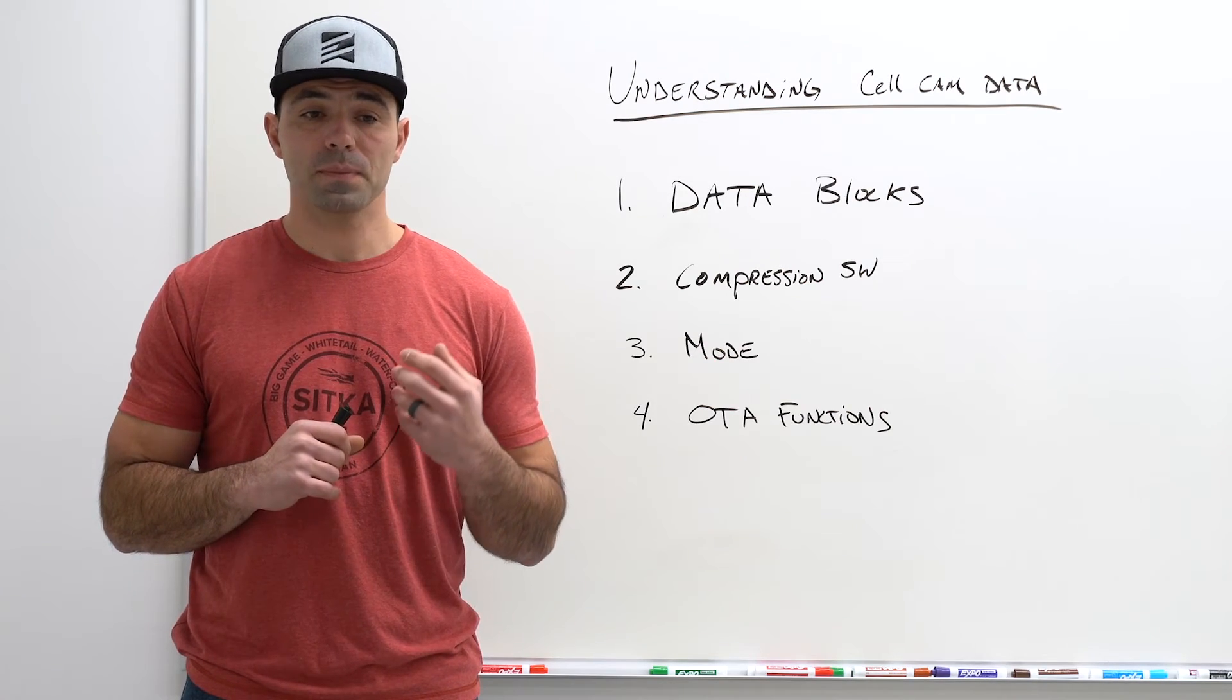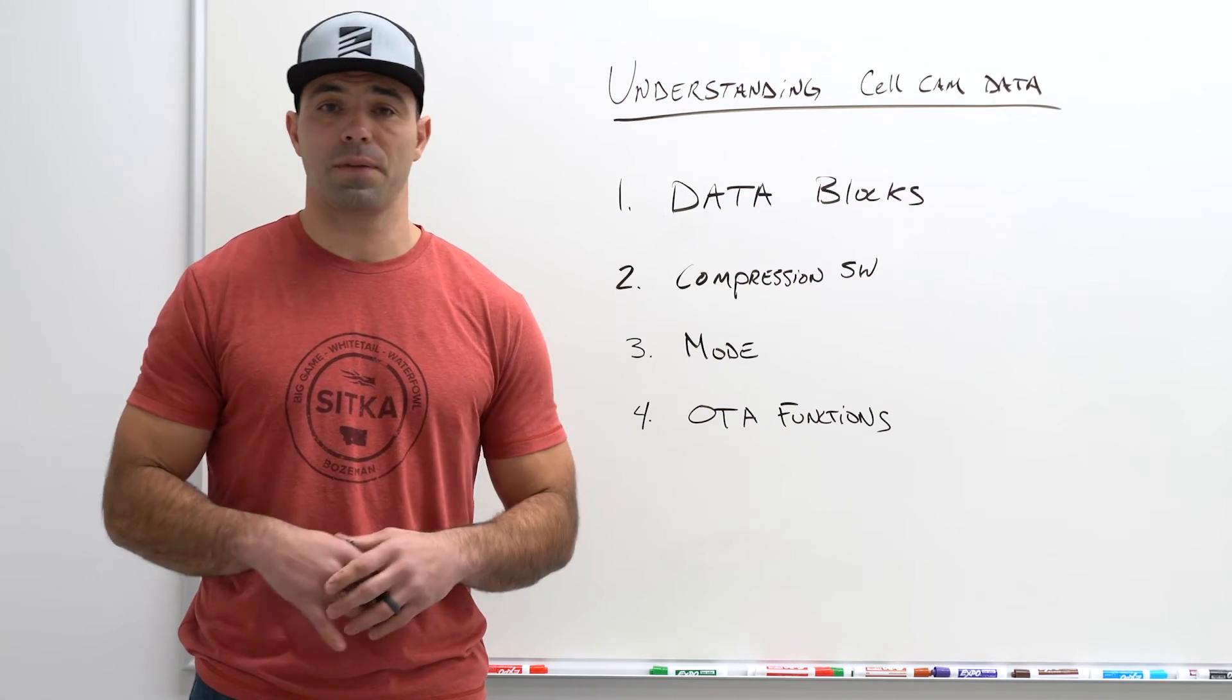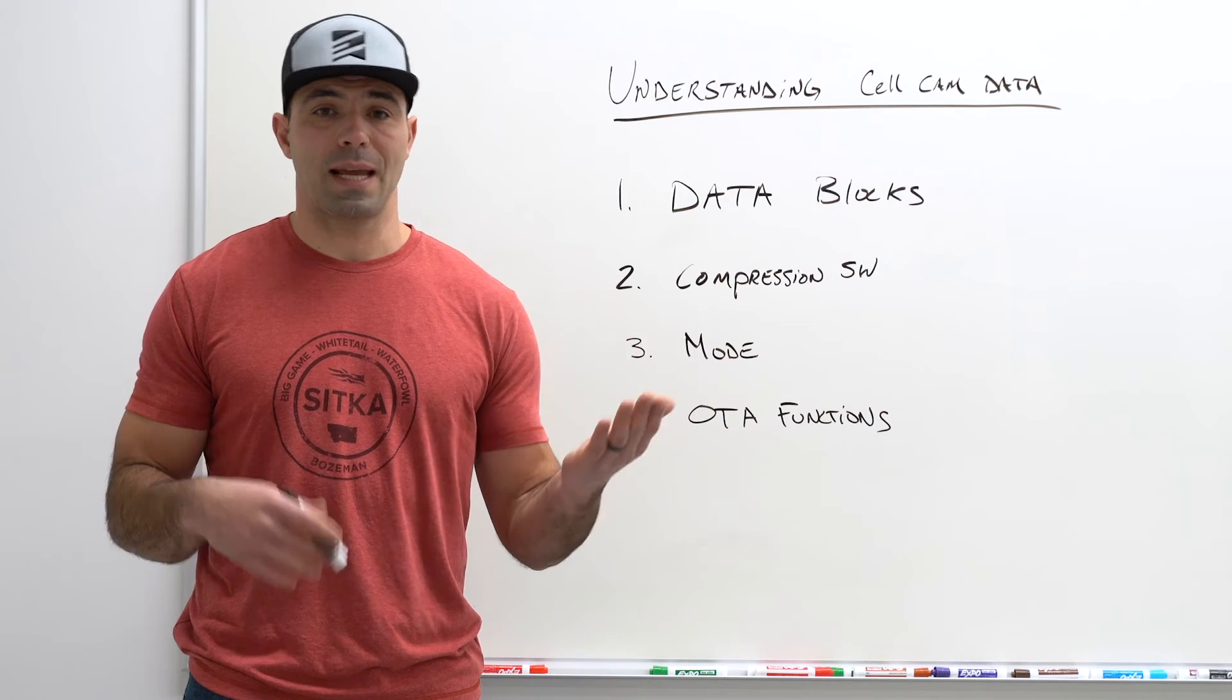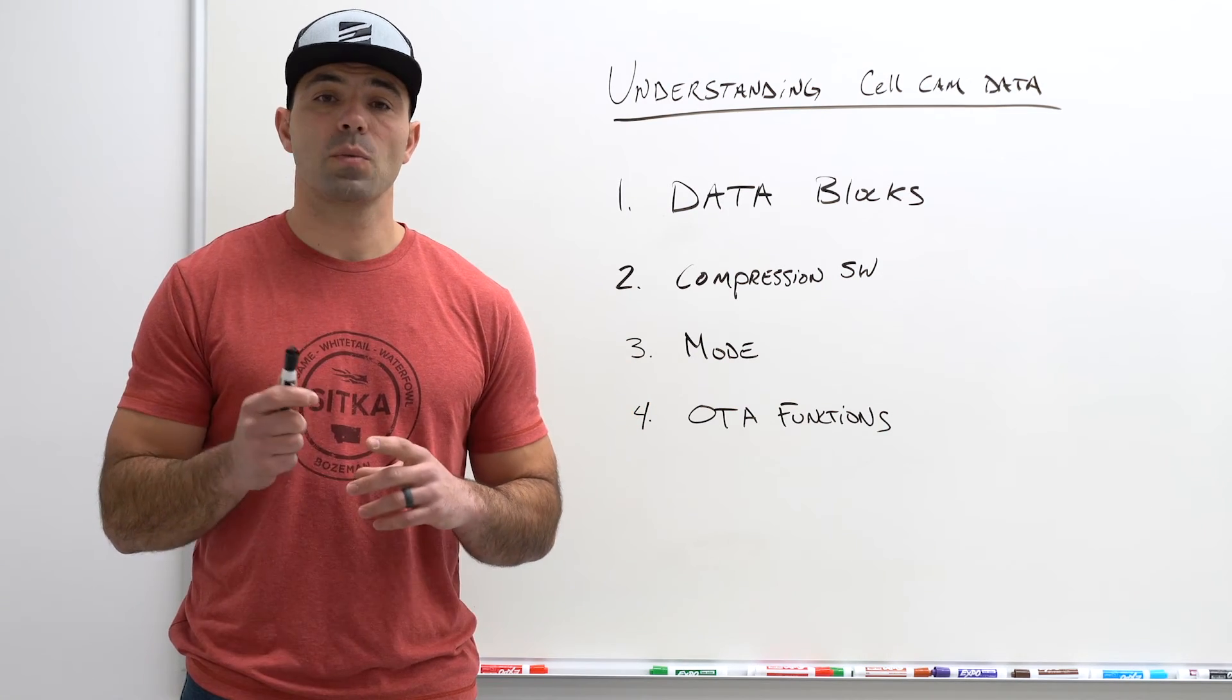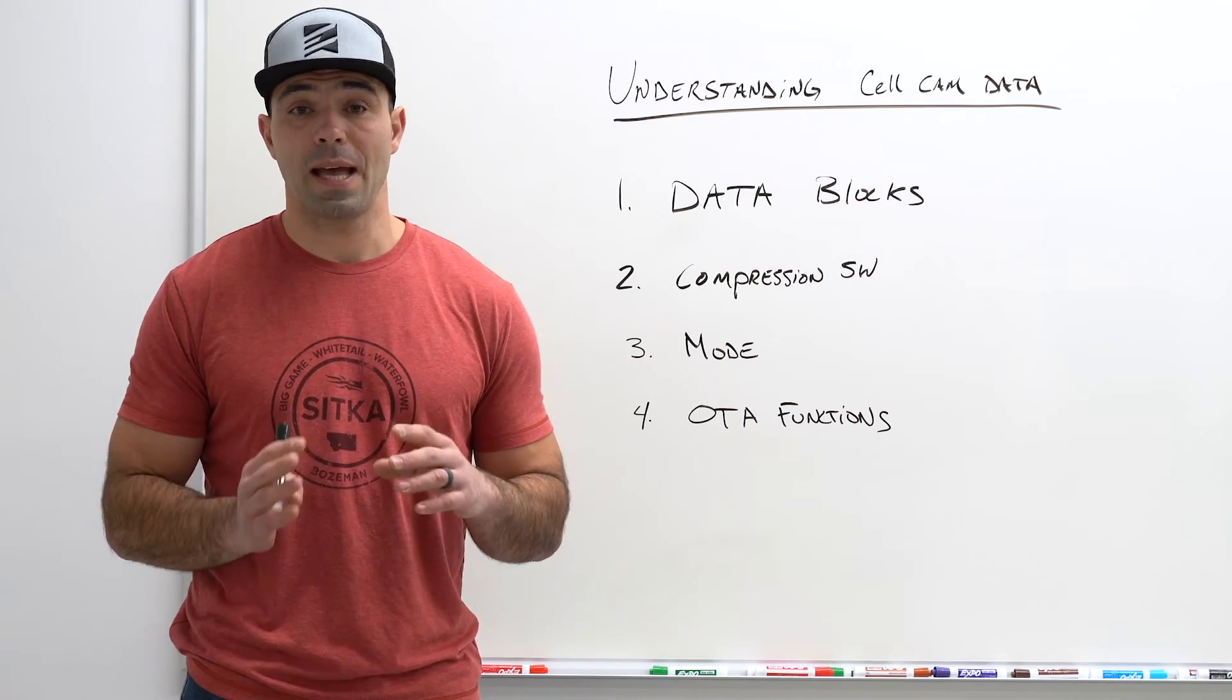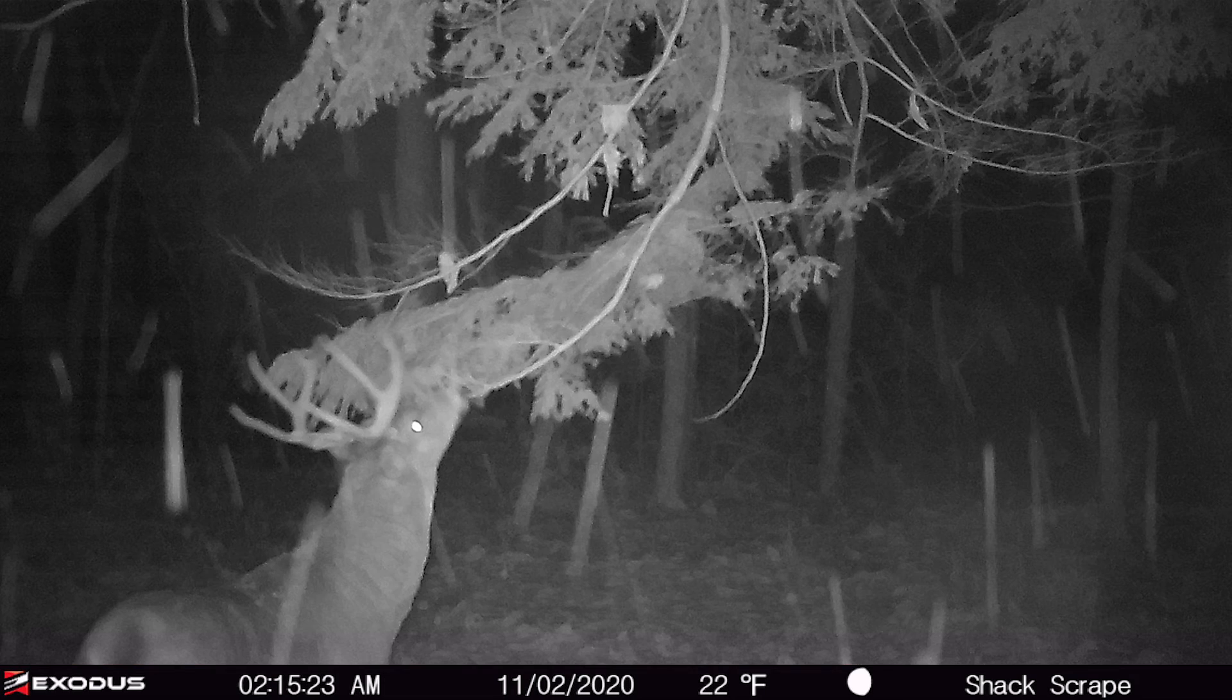When you start comparing how many photos you can get for $3 or how many photos you can get for $10 or whatever that plan looks like, typically that's an average between day and nighttime photos. The reason why you take a day and night is because a daytime picture has more color and has more information in it than a nighttime photo that may be on a gray scale or black and white.